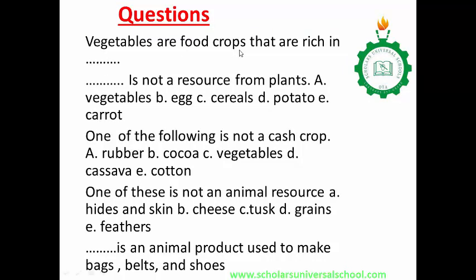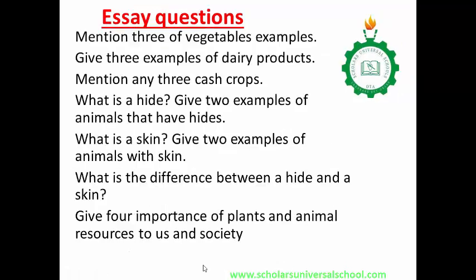Question: Which of the following is not a resource from plants? A. Vegetables. B. Egg. C. Serious. D. Potatoes. E. Carrots. Which of the following is not a cash crop? A. Rubber. B. Cocoa. C. Vegetables. D. Cassava. E. Maize. Which of the following is not an animal resource? A. Ice cream. B. Cheese. C. Tusks. D. Grains. E. Feathers. Fill in the blank: Dash is an animal product used to make bags, belts, and shoes. Third section: Mention three examples of vegetables. Give three examples of dairy products. Mention any three cash crops. What is a hide? Give two examples of animals that have hides. What is a skin? Give three examples of animals with skin. What is the difference between a hide and a skin? State four importances of plant and animal resources to self and society.